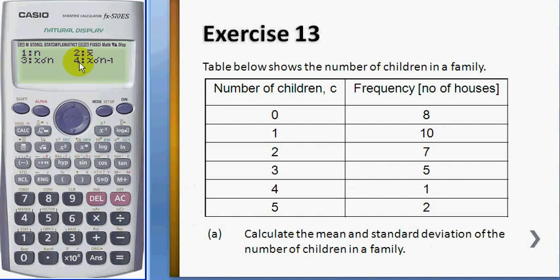It depends on which formula you want to use. The formula divided by n is number three, and divided by n minus one is number four. For samples, normally we use four. The standard deviation for this grouped data is 1.41287.